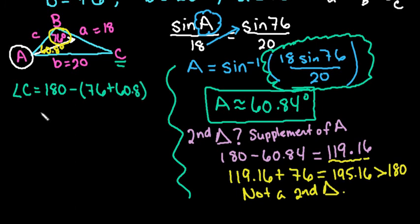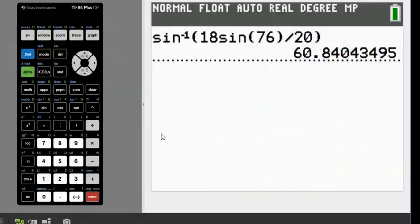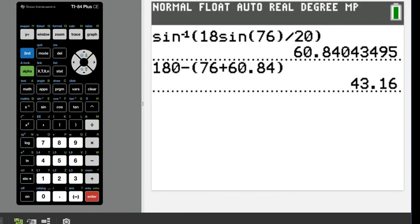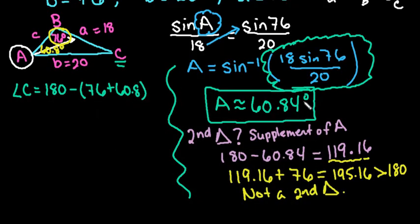So if I solve this, you can just plug this directly into your calculator as is: 180 minus 76 plus 60.84, and we get 43.16. So angle C is approximately 43.16 degrees.